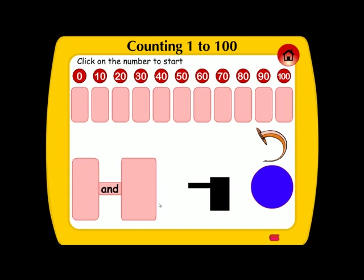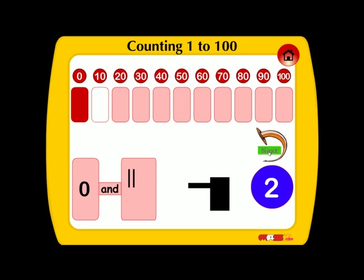Click on the number. 0 and 1 is 1. 0 and 2 is 2. 0 and 3 is 3. 0 and 4 is 4.